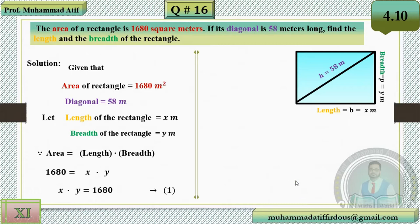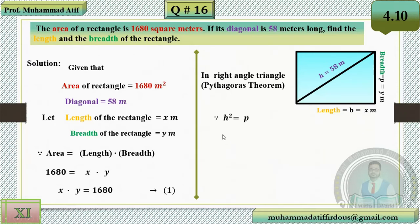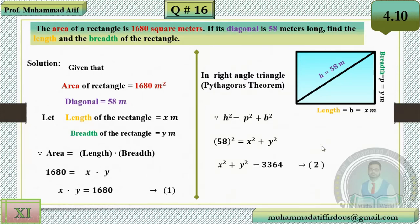Using another fact — in a right-angle triangle we can use the Pythagorean theorem: hypotenuse squared equals perpendicular squared plus base squared. From the diagram, the hypotenuse is 58, breadth is y, and length is x, so replacing these values gives us equation number two: x² + y² = 3364.